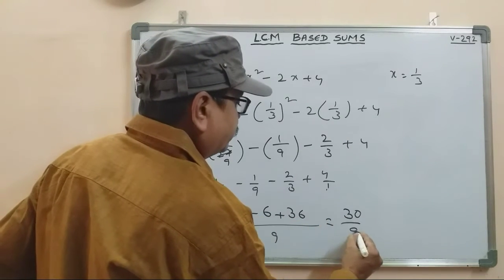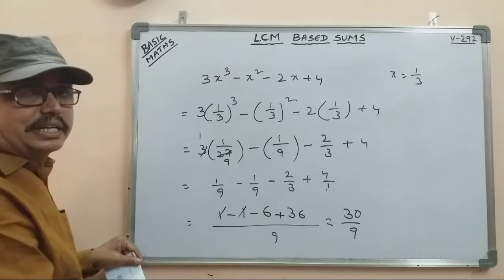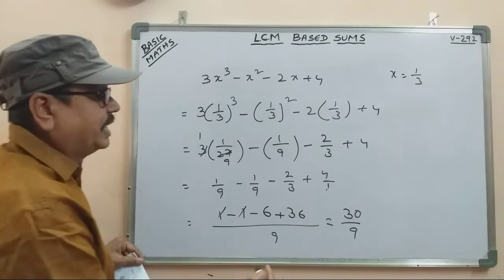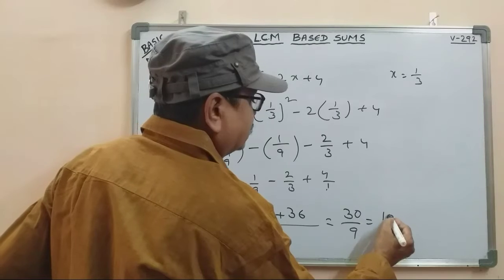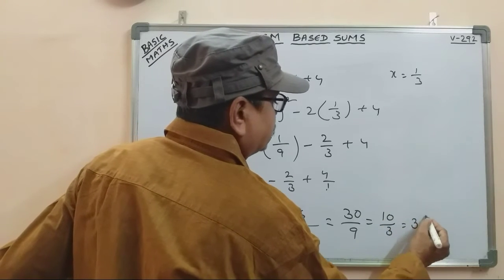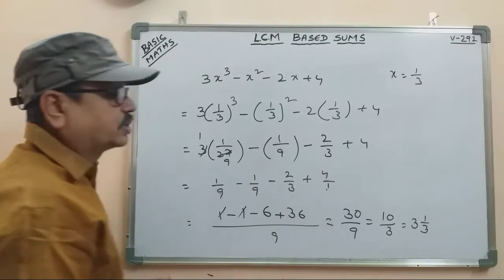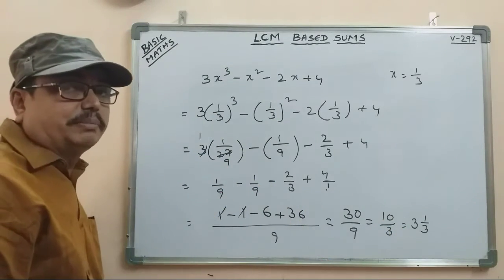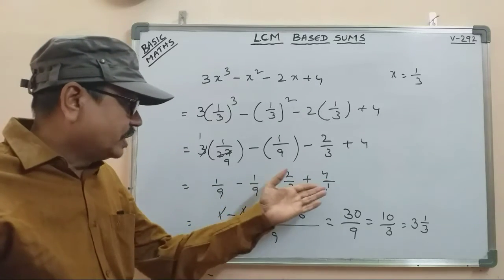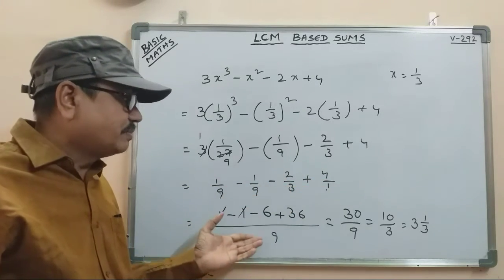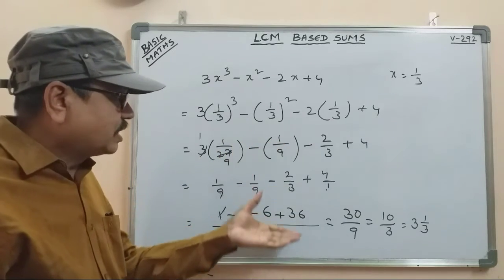32 by 9. 1 minus 1 cancel, minus 6 plus 36 is 32 by 9. This is 3 table, 3 times, 3 threes. This is 3 and 1 by 3 — mixed number is 3 and 1 by 3. So this is fractions, decimals, LCM — this is the calculation.